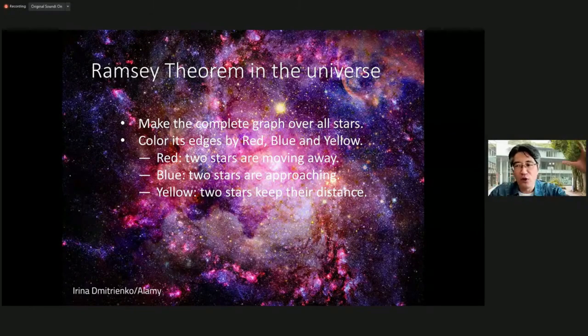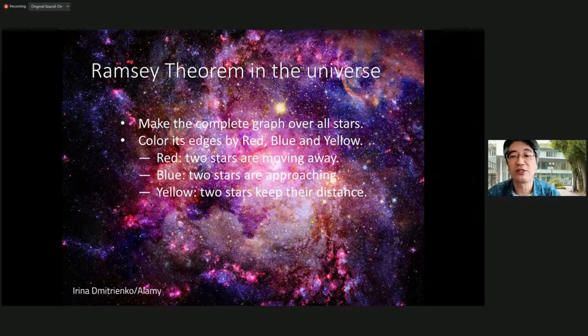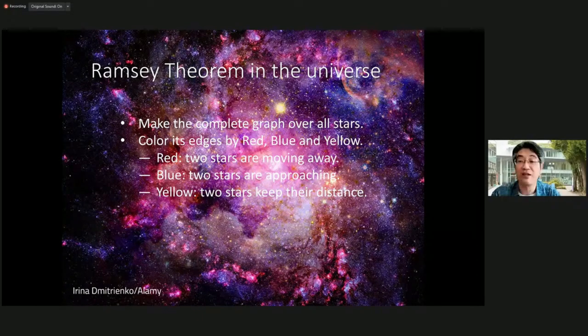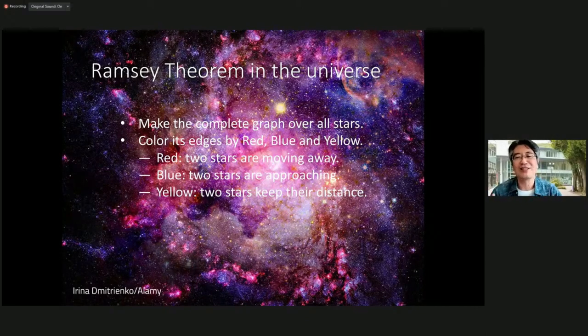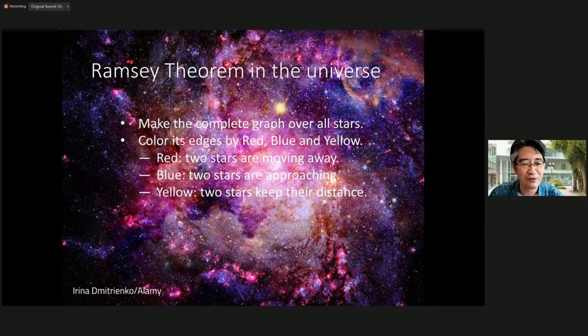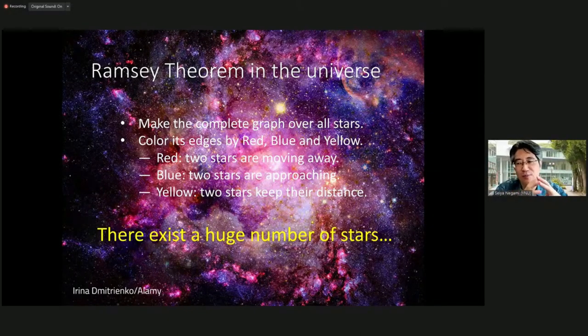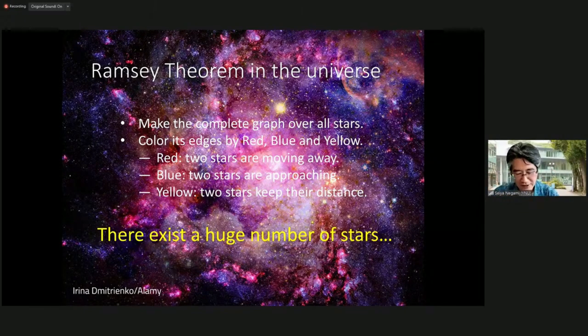And assign three colors, red, blue and yellow to its edges according to the following rule. Red, if two stars are moving away from each other, we assign red to the edge joining these stars. If two stars are approaching to each other, we assign blue to the color between them. And otherwise, that is two stars keep their distance, not approach, not going away, we assign yellow to its edges between them. What happened there? By Ramsey theorem, we can conclude that there is a very, very big monochromatic complete graph consists of stars. It's totally red or totally blue or totally yellow. These situations corresponding explosion or shrink or rotating. Such phenomenon happens in many, many places in the universe, but we can conclude such situation, existence of such situation, that we never calculate anything and also never try to solve the differential equation that physicists use. That is a point. This is mathematical power.